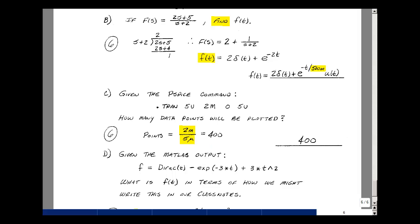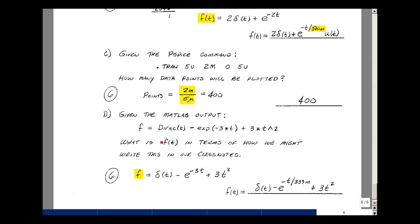And lastly, given this MATLAB output, what is f(t)? Well, Dirac is our impulse function. This is e^(-3t), and this is 3 times t squared. Each problem here was worth 6 points. It was little or no partial credit. And this is the solution to exam number 2.